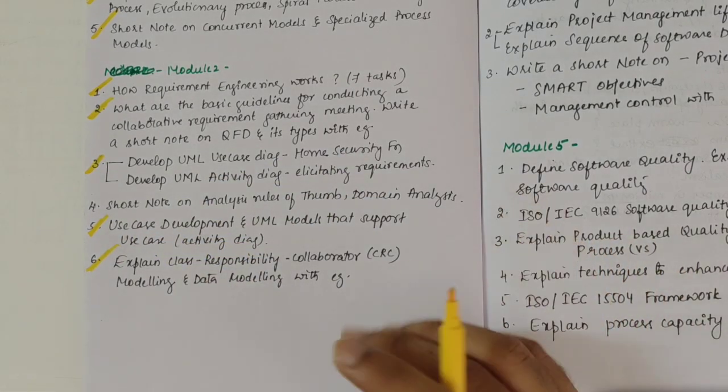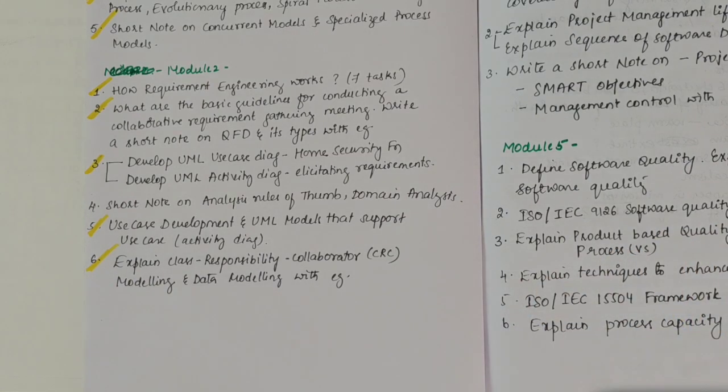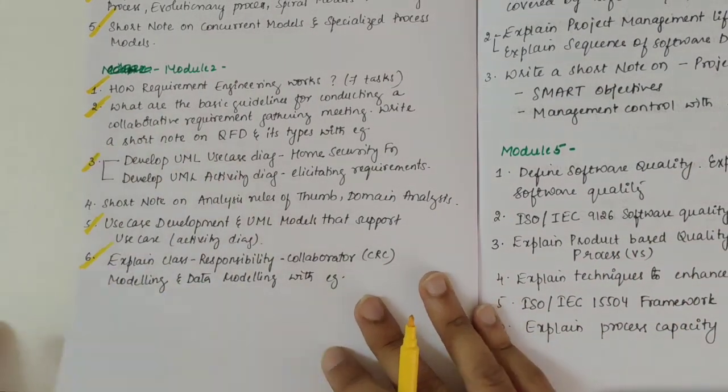Then coming to sixth: CRC modeling and data modeling are pretty important ones. We have class modeling, other modeling also, but among those CRC class modeling and data modeling are pretty important. This was about second module.